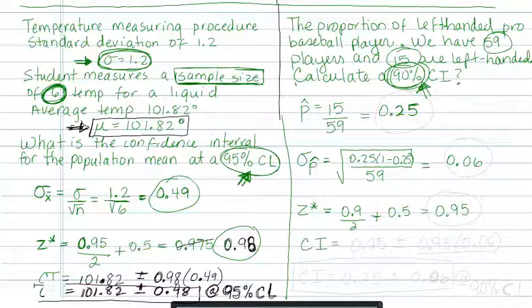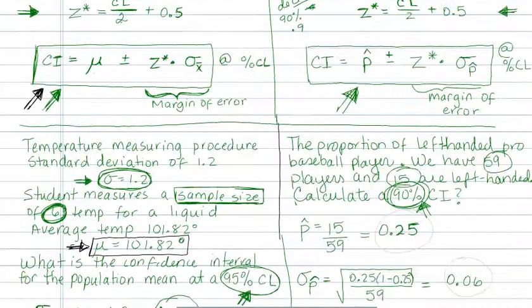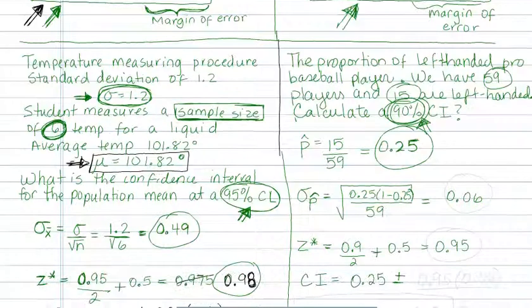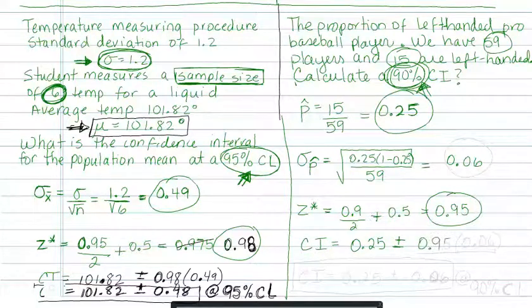Now I'm ready to build my confidence interval. My confidence interval is P-hat, which is 0.25, plus or minus z-star, which is 0.95, times sigma sub P-hat, 0.06. You see all three numbers that I just calculated are the three numbers that I just used. So I calculate one by one and then I plug them into my confidence interval. So my confidence interval is 0.25 plus or minus 0.95 times 0.06.